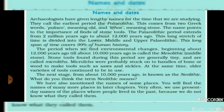This long span of time covers 99% of human history. The period from about 12,000 years ago to about 10,000 years ago, when environmental changes were beginning, is called the Mesolithic, which means middle lithic.